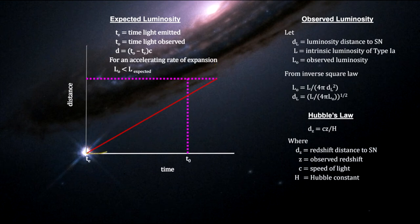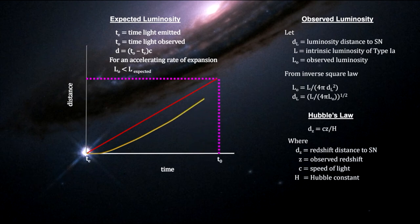By the same token, if the expansion is speeding up, the expansion rate in the past would have been smaller than what we see now, which means it would have taken a longer time to expand from its size at light emission time to its present distance, compared to a non-accelerating universe. This would result in a longer light travel time, larger distance traveled, and a dimmer observed supernova, compared to a non-accelerating universe.